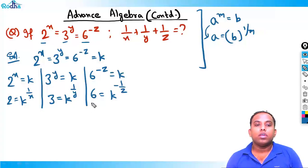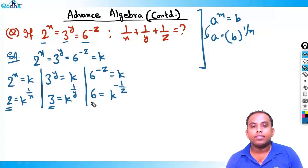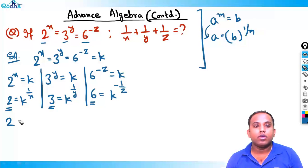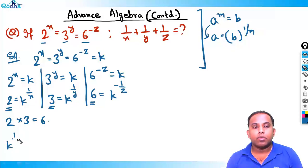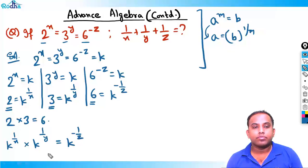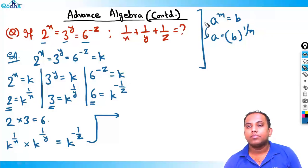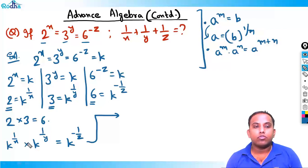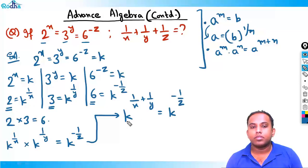Now we have three results. We know that 2 × 3 = 6. So we can write k^(1/x) × k^(1/y) = k^(-1/z). Since the bases are the same, we use the rule a^m × a^n = a^(m+n), so k^(1/x + 1/y) = k^(-1/z).